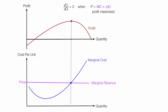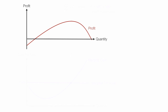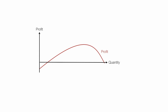The gist of this video is showing how profits change as quantity increases and proving that profit is maximized when marginal cost equals marginal revenue. As you can see here, as quantity increases profit is not constant — this is due to diminishing marginal returns — and profit is maximized at that quantity where the slope of the tangent line is equal to zero.